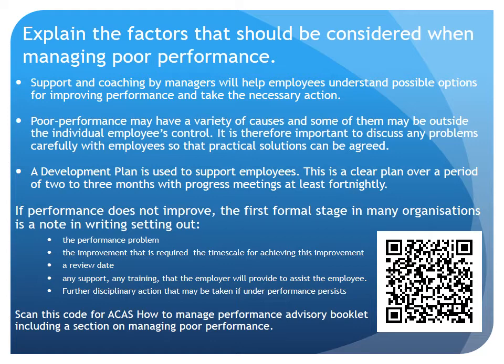The second part of 3.1 asks you to explain the factors that should be considered when managing poor performance. Poor performance is often quite difficult to deal with and as a result may be avoided. Your role in HR is to provide support and coaching to line managers to give them the skills to deal with these issues. Line managers will need to provide support and coaching to their employees to help them understand possible options for improving their performance and to take the necessary action.